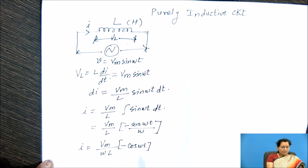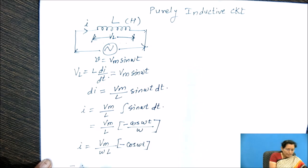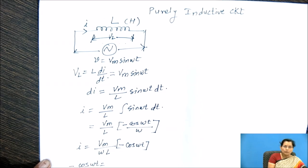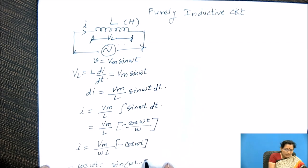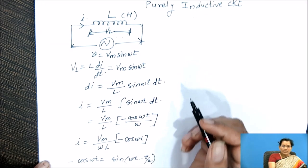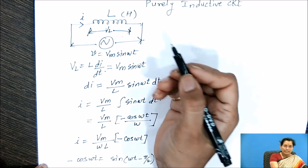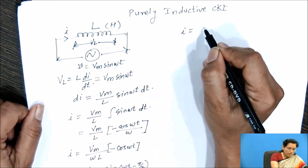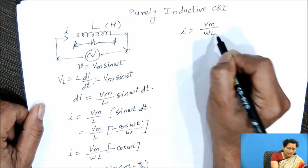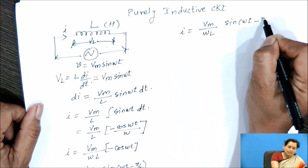Now we can write down minus cos ωt equal to sin(ωt − π/2). So if we write down minus cos ωt equal to sin(ωt − π/2), in this equation we will get the current equation as I equal to Vm/(ωL) sin(ωt − π/2).